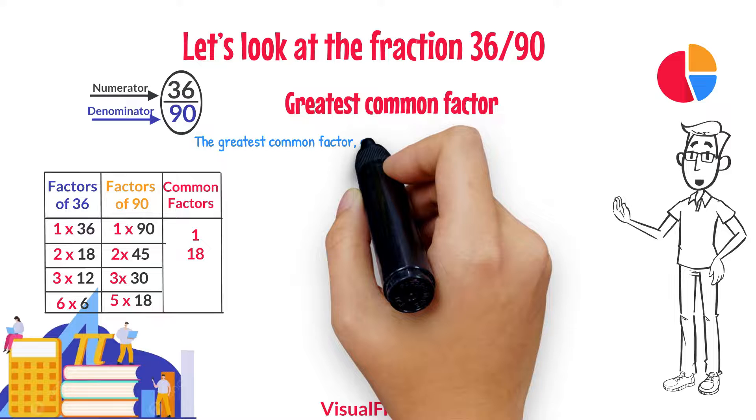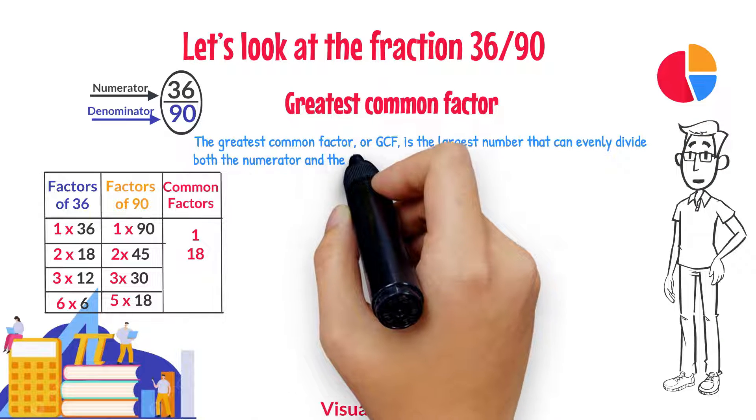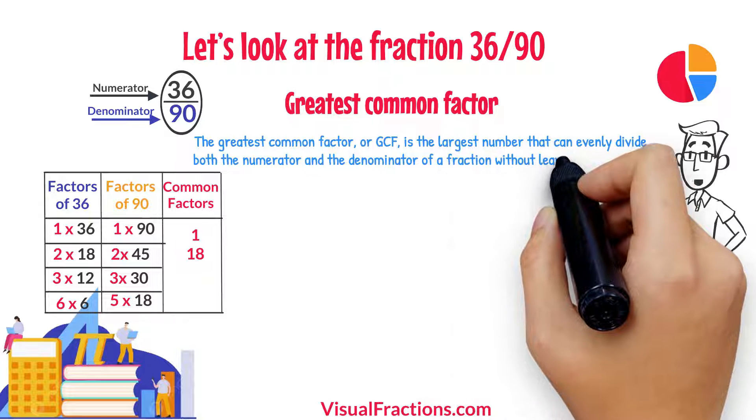The greatest common factor, or GCF, is the largest number that can evenly divide both the numerator and the denominator of a fraction without leaving a remainder.